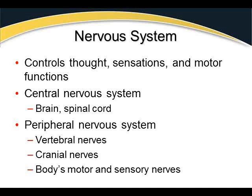The nervous system controls our thought, our sensations, and our motor functions. It's divided into two major sections: the central nervous system and the peripheral nervous system. The central nervous system is simply the brain and the spinal cord. Everything else is peripheral — the vertebral nerves that come off the spinal cord and head out to various areas of the body, and the cranial nerves, which come off the base of the brain, serving the body's motor and sensory functions.